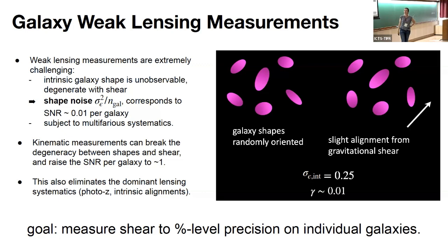We are trying to bypass that by using kinematics to break the degeneracy between shapes and shear, and thus eventually reduce the shape noise after measurement to order one per galaxy.